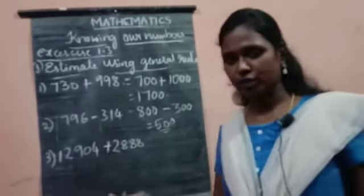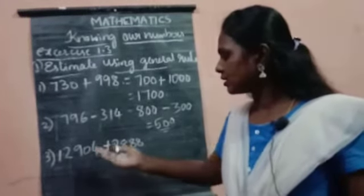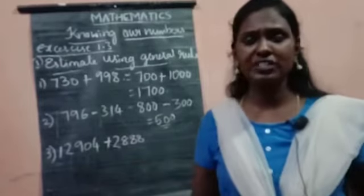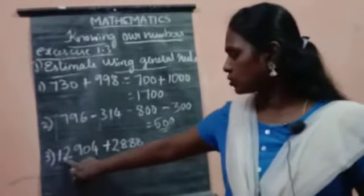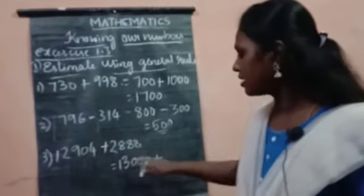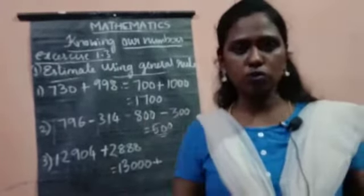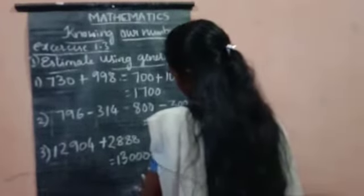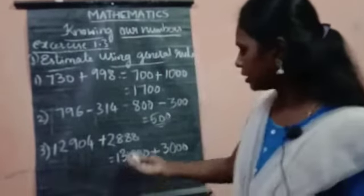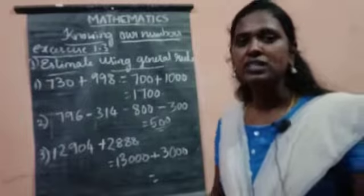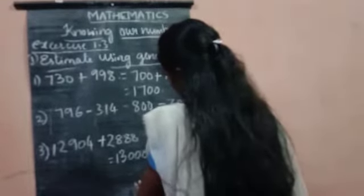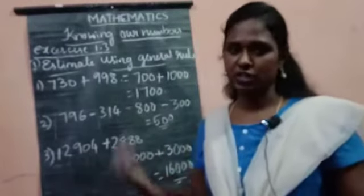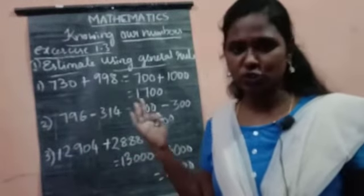Let us see the next example. 12,904 is there. 900 is near to 1000. If you add one more 1000, you will get 13,000. Plus 2,888. 888 is also near to 1000, so add 3,000. Now if you add 13,000 plus 3,000, it is totally 16,000. This is what the general rule is. I hope you understood with these sums.